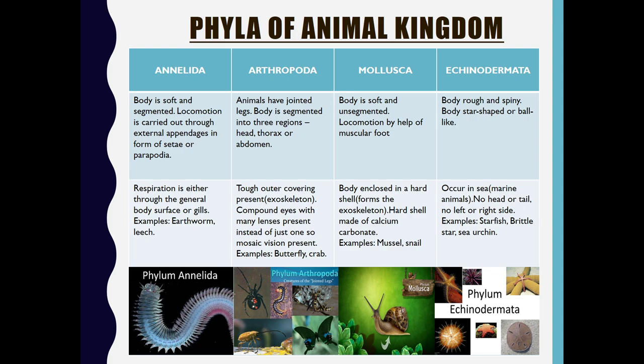Coming to Phylum Echinodermata: the animals under this category have a rough and spiny body. The body may be star-shaped or ball-like. They are mainly marine animals. They have no head or tail, no left and right side — they have almost symmetrical structures. Examples include starfish, brittle star, and sea urchin.